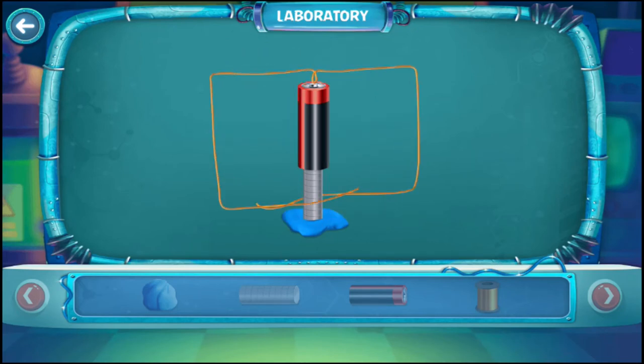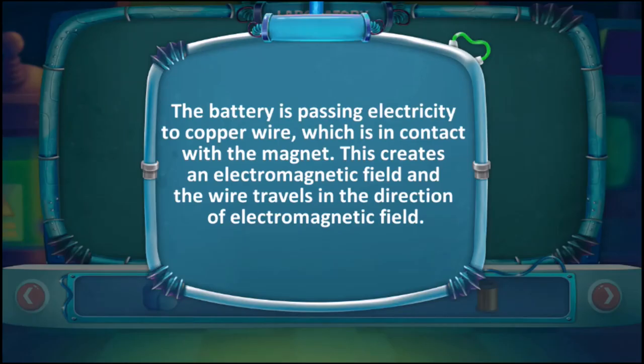See the wire rapidly starts to spin. The battery is passing electricity to the copper wire, which is in contact with the magnet. This creates an electromagnetic field and the wire travels in the direction of the electromagnetic field.